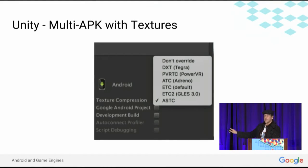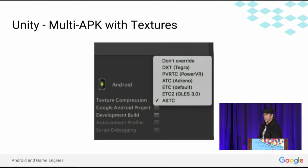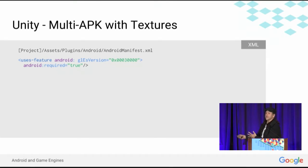Unity will nicely add the texture format into the manifest file for you, but if you select ETC2, you'll want to make sure you manually set the required GLES version to 3.0. To do this without selecting the ES3 path in Unity, you can take advantage of manifest overriding. By creating an Android manifest file in the plugins directory that contains just the use-feature element for GLES version, this is also how you can add any customizations you might want in the manifest.